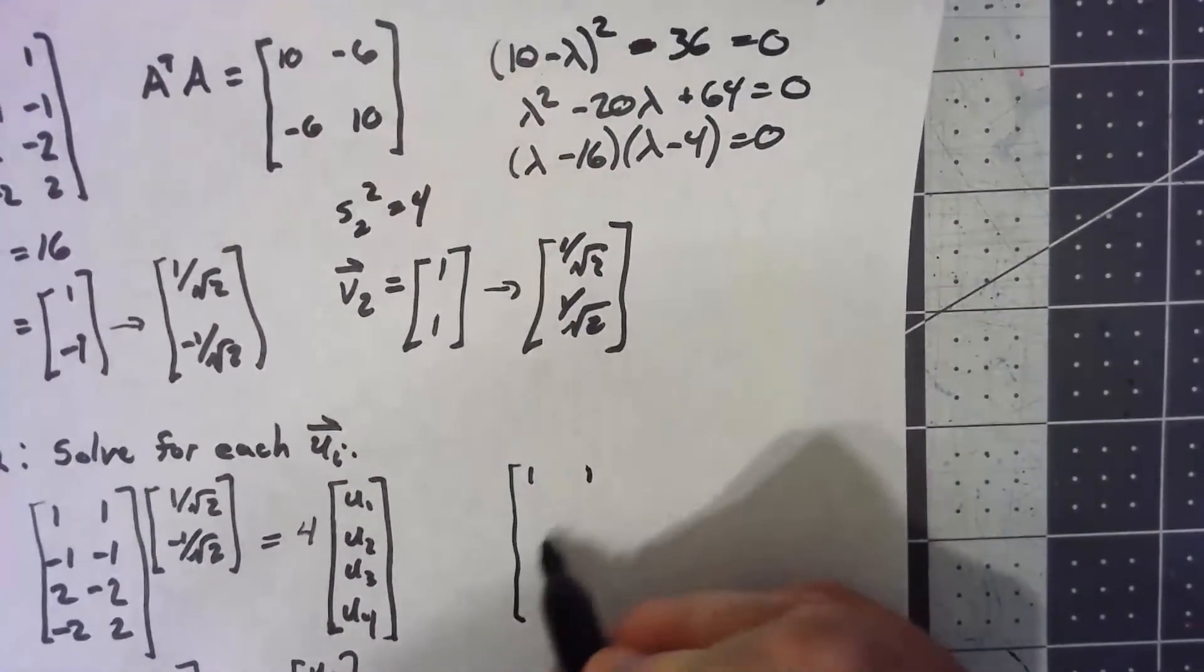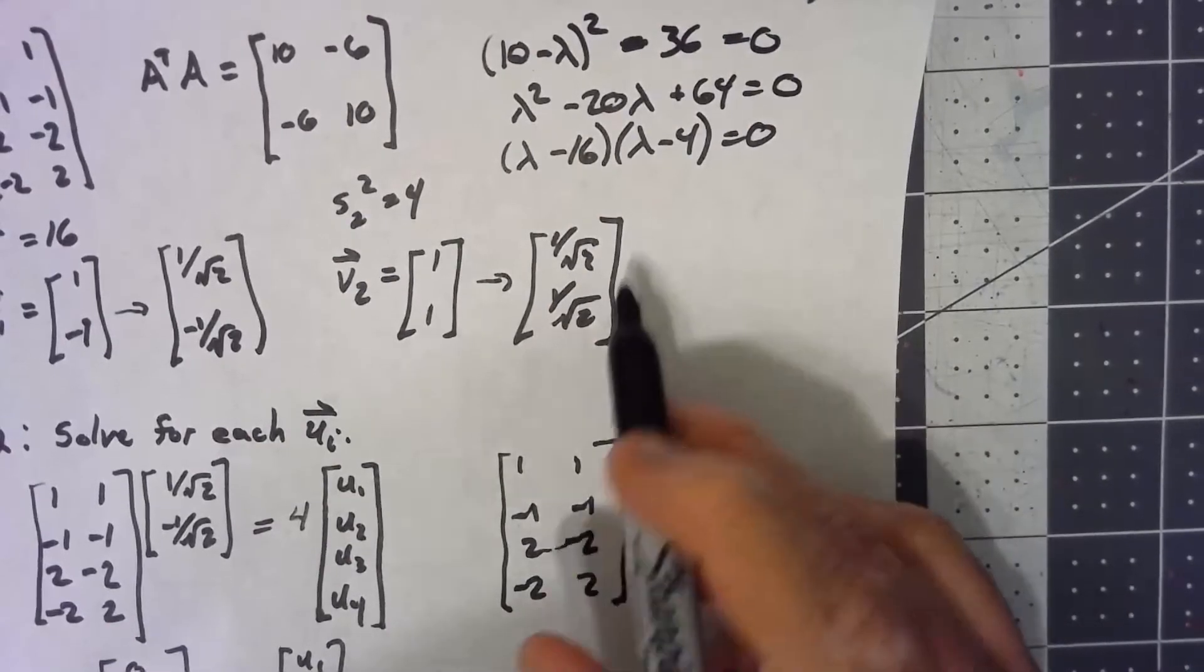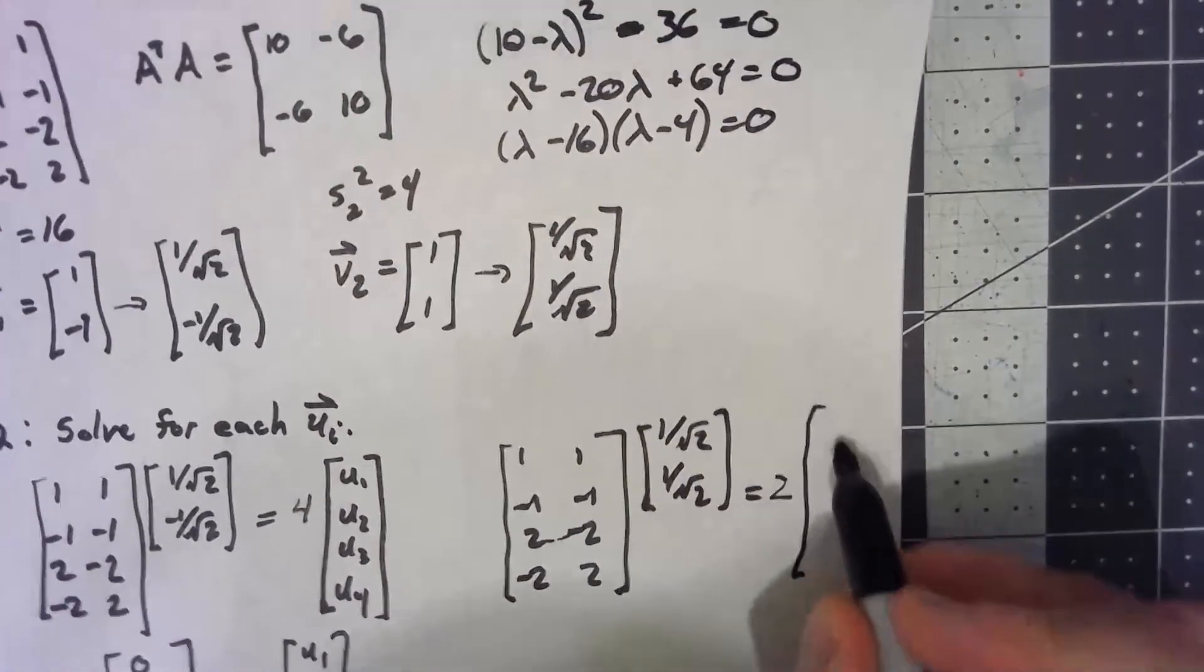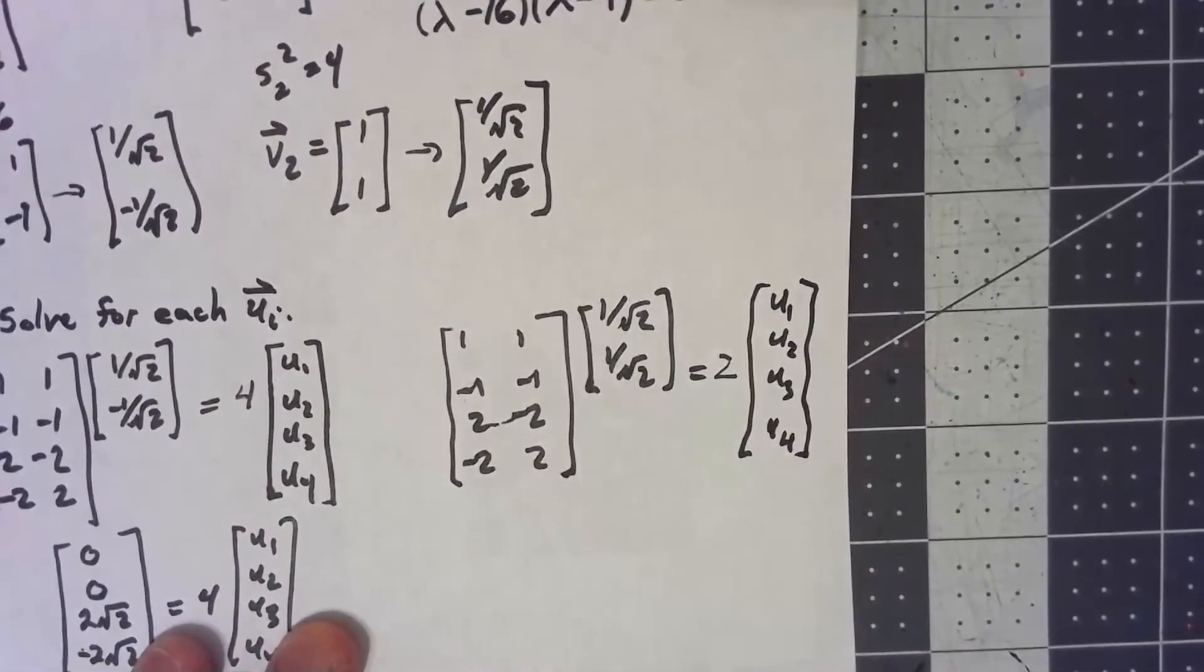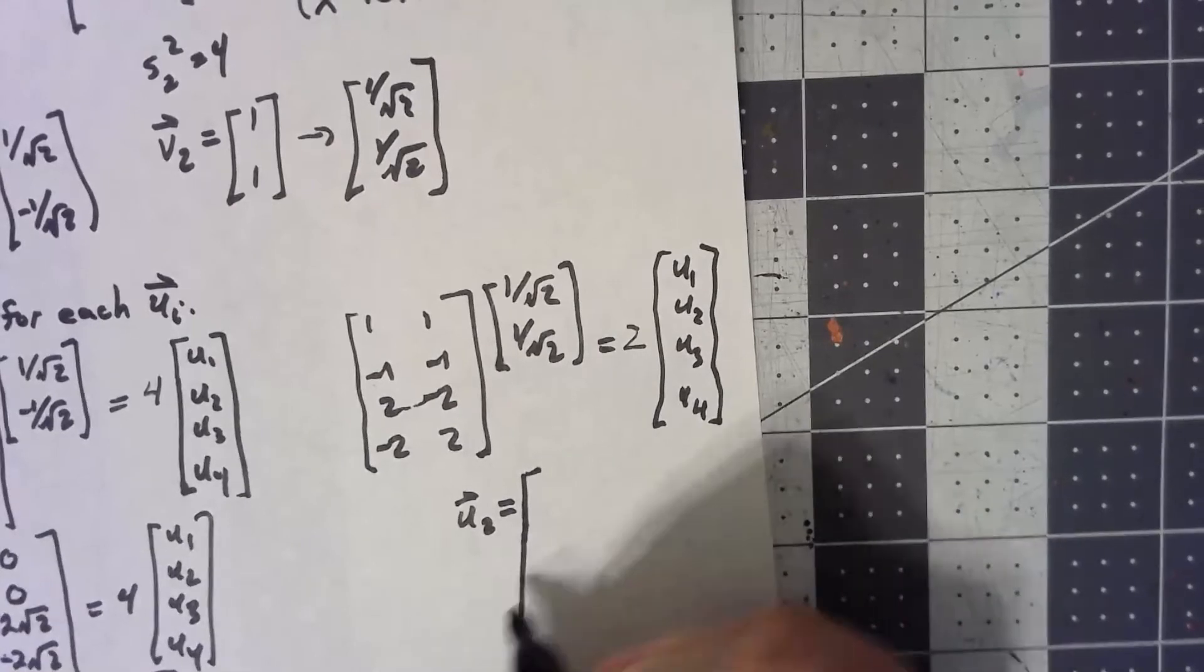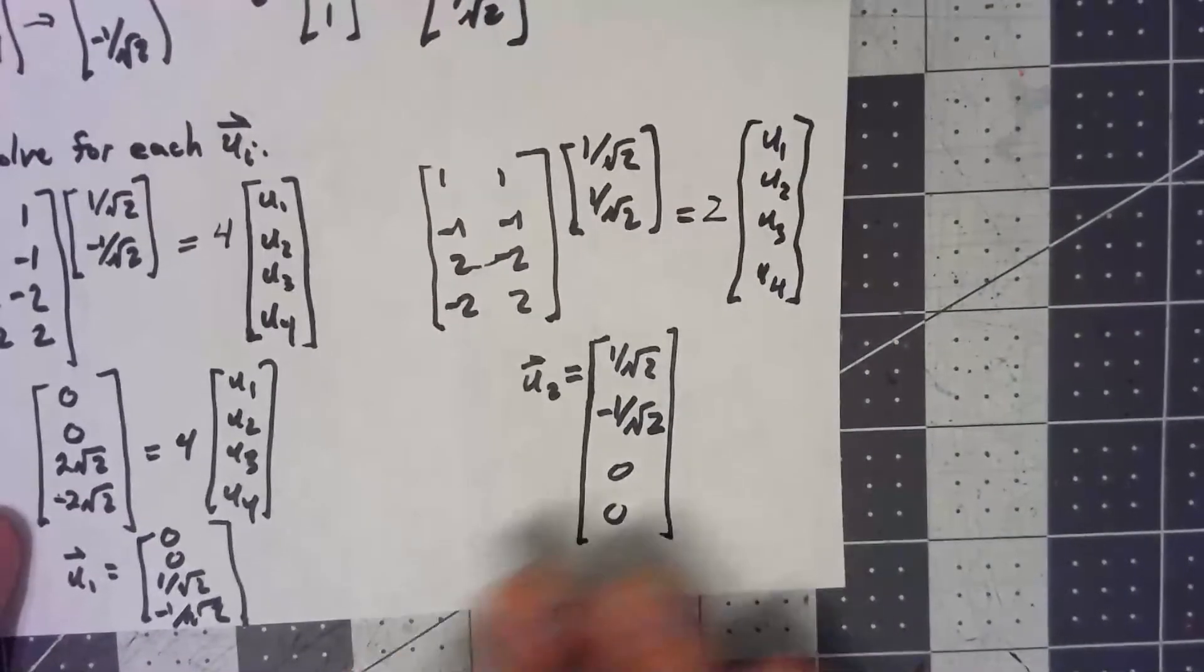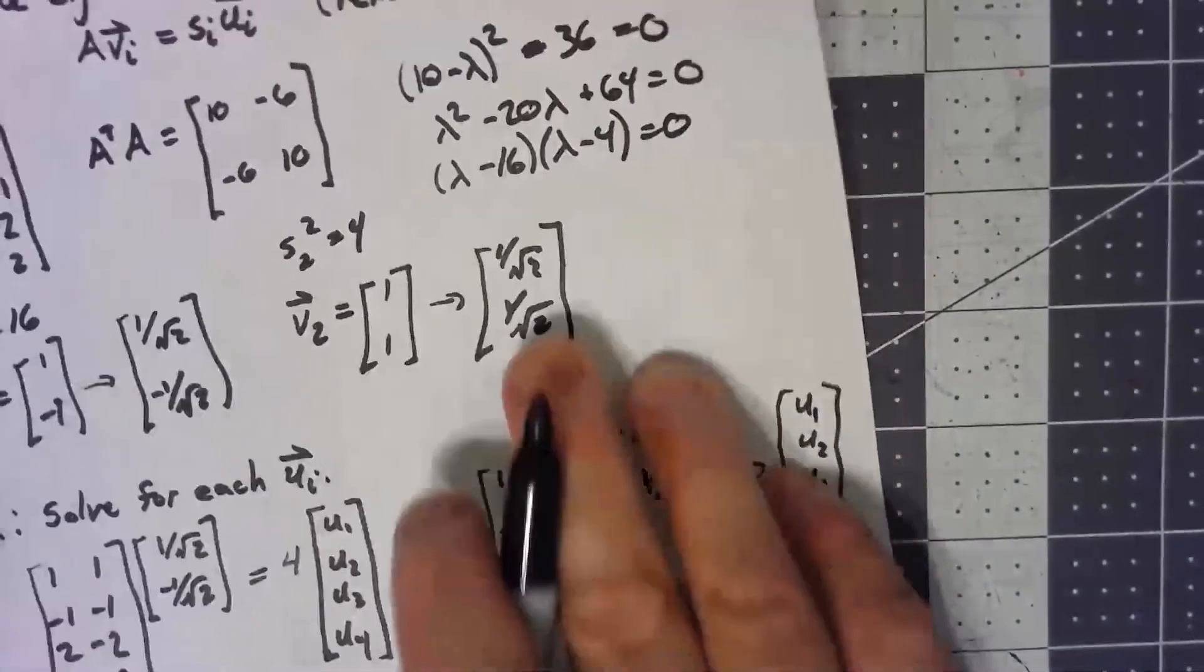Same thing for the other one. When I take my matrix A times my other v, my 1 over root 2, 1 over root 2, this is going to be that singular value of 2 times some u vector. Do the matrix multiplication, divide by 2, and we get the vector u2 is, in this case, 1 over root 2, negative 1 over root 2, 0, 0. It's worth noting that these are automatically, if we've done this right, orthogonal and unit vectors. The whole process of doing this, we don't need to normalize these again, unlike what we had to do with the v's.